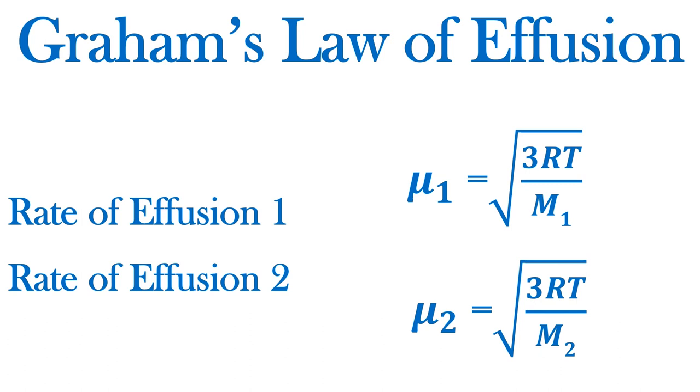Here we see the root mean square velocity of two gases. Thomas Graham proposed a simple yet elegant equation to compare two gases under the same temperature and pressure conditions. Since the square root of 3RT is a constant, we can say that the effusions of two gases are inversely proportional to the square root of their molar masses.